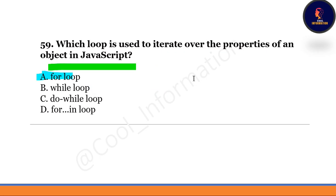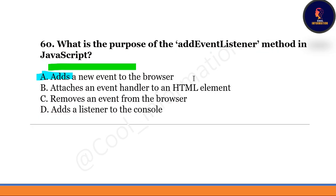This is the second-to-last question of this series: which loop is used to iterate over the properties of an object in JavaScript? Option D is correct — the for...in loop is used to iterate over the properties of an object.